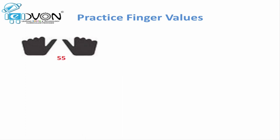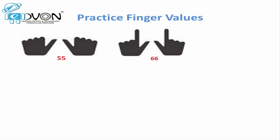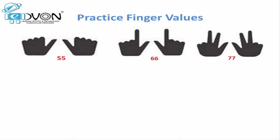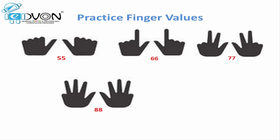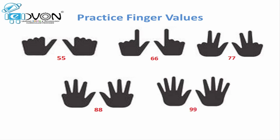To represent 55, we open the thumbs on both hands. To place 66, we open the thumb and one finger on both hands. For 77, we open the thumb and two fingers, as 77 has seven tens and seven units. For 88, we open the thumb and three fingers on both hands. And for 99, we open the thumb and all four fingers on both hands.